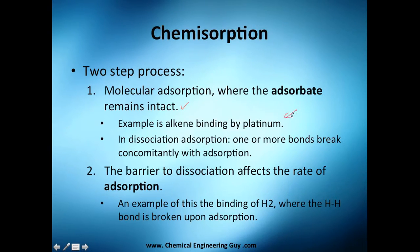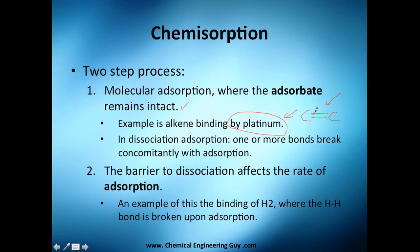An example is an alkene binding with a platinum surface. One or more bonds of the alkene — remember, alkenes have at least two bonds — will essentially break so they can adsorb onto the catalyst. The barrier to dissociation affects the rate of adsorption.